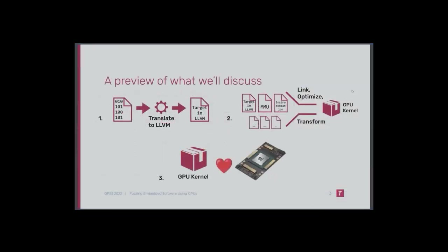Normally when people hear about fuzzing things with GPUs, they think we are fuzzing the GPU itself — we may do that on accident, but that is not the goal. What we're actually going to do is take a binary, ideally something small like a function or a firmware image, translate it to LLVM, link and transform it in interesting ways, and out comes a GPU kernel in NVIDIA PTX. We then run this target program on many inputs, massively in parallel on a GPU, to see which ones cause it to fault.